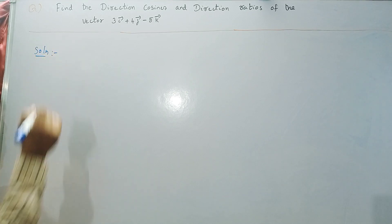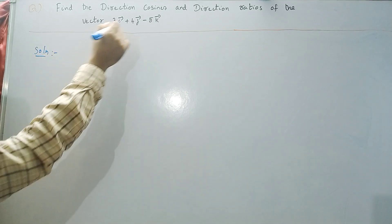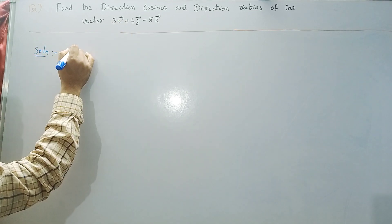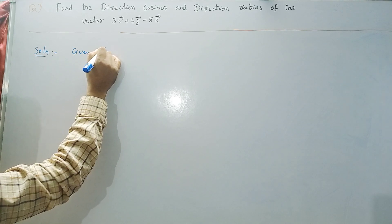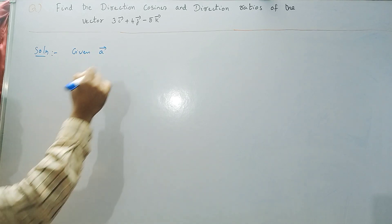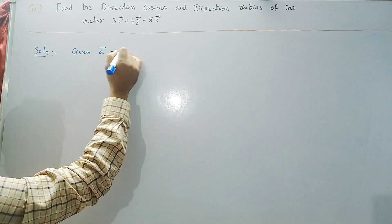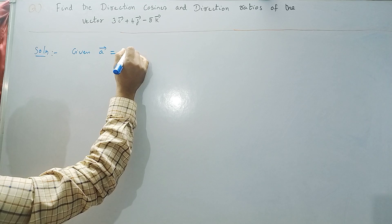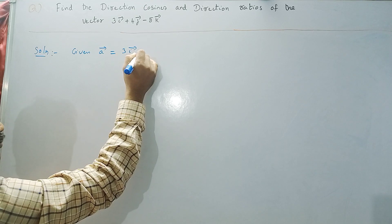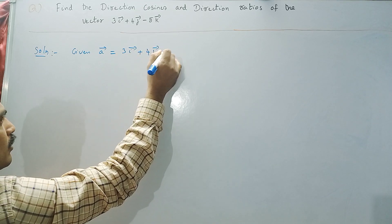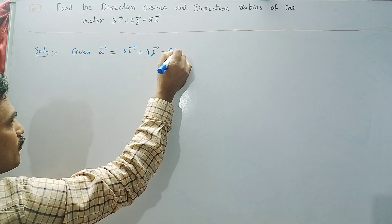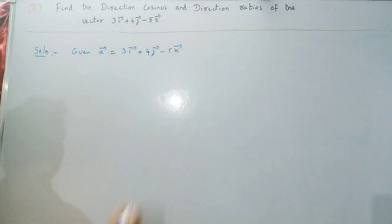Now for the solution: as I told you before, first write the given vector. So we write a bar equal to 3i bar plus 4j bar minus 5k bar.